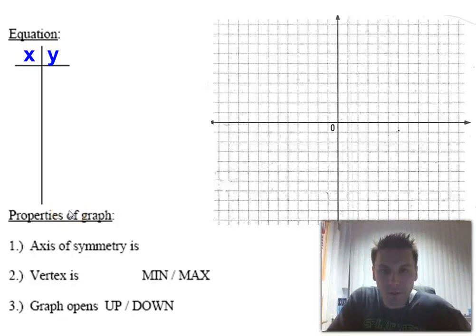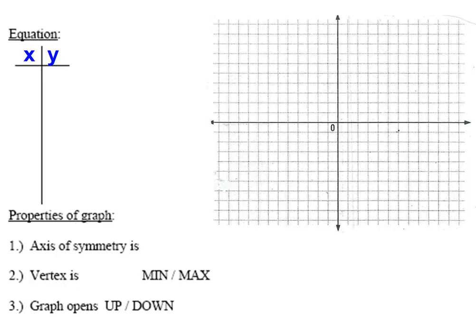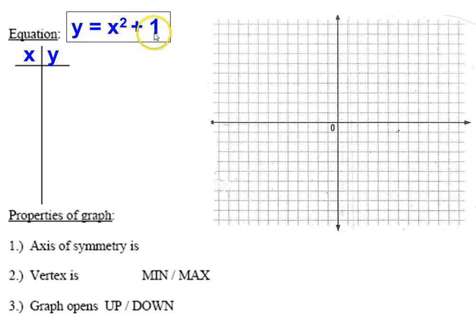We're back with a couple more examples on graphing quadratic equations. In the last examples we graphed equations of the form y equals ax squared, and now we're going to mix it up a little bit. We're going to add to it — we now have ax squared plus another constant on one side of the equation.